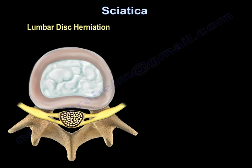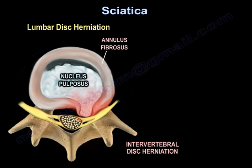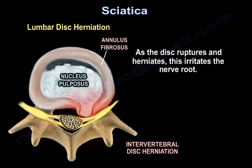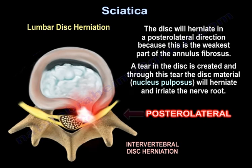The most important cause of sciatica is lumbar disc herniation. As the disc ruptures and herniates, it irritates the nerve root. The disc will herniate in a posterolateral direction because this is the weakest part of the annulus fibrosus. A tear is created, and through this tear, the disc material — the nucleus pulposus — will herniate and irritate the nerve root.